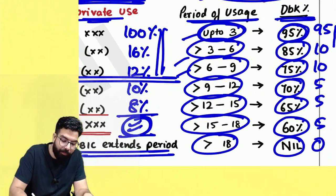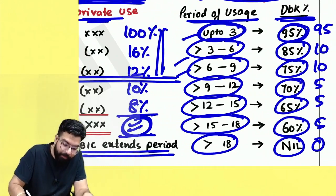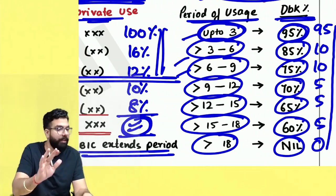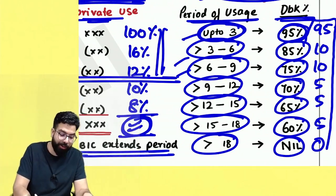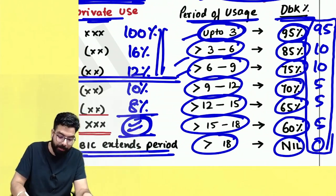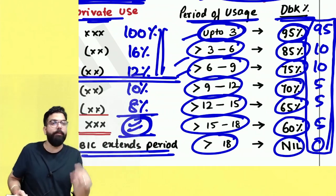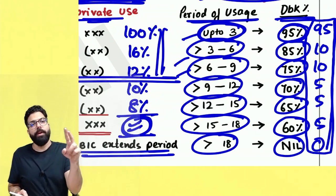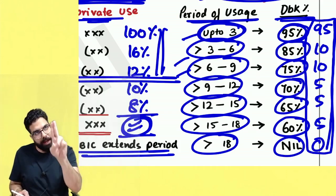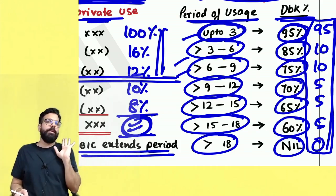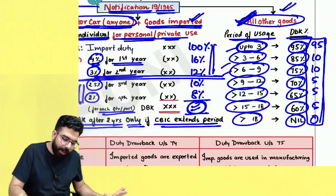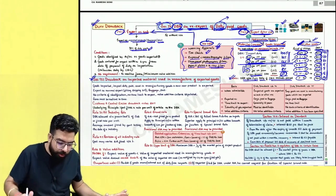To remember the percentages, use the mnemonic '9510105550' — starting at 95, reduce by 10, then 10, then 5, then 5, then 5, then 0. That gives you 95, 85, 75, 70, 65, 60, nil.